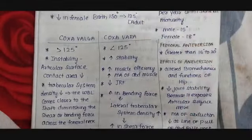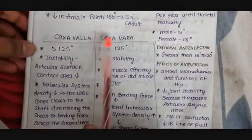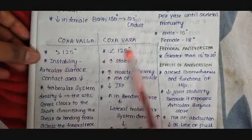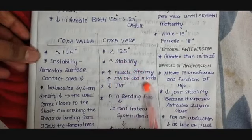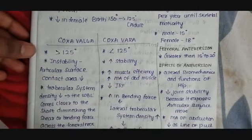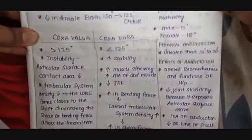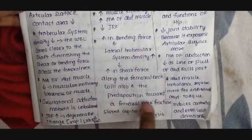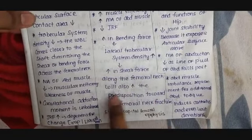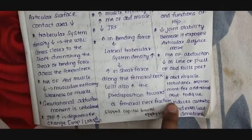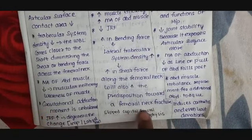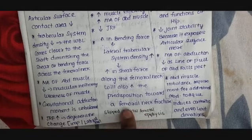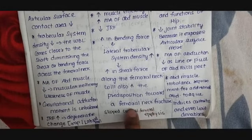Coxa vara is opposite to coxa valga — the decrease in the angle of inclination results in coxa vara. Here the stability increases. Muscular efficiency and the moment arm of the abductor muscle increase, and the joint reaction force decreases. The disadvantage is that the increase in bending force increases the lateral trabecular system, but it may also result in fracture of the femoral neck. The increase in shear force along the femoral neck also increases predisposition to femoral neck fracture. Coxa vara may also result in slipped capital femoral epiphysis, where the femoral head gets displaced at the level of the epiphysis.